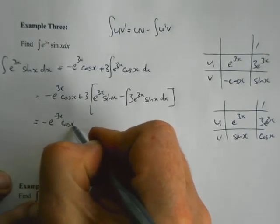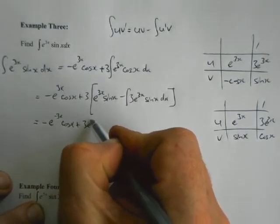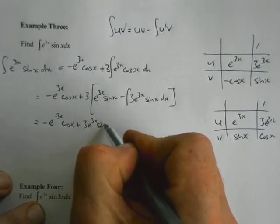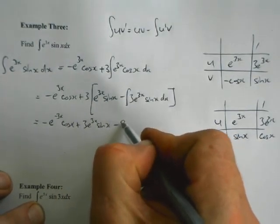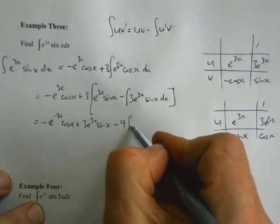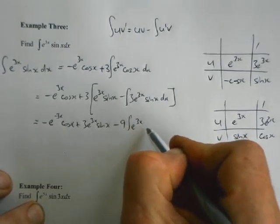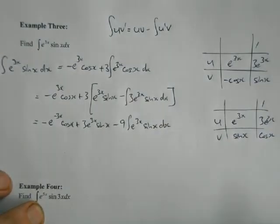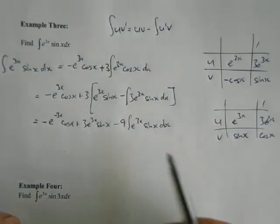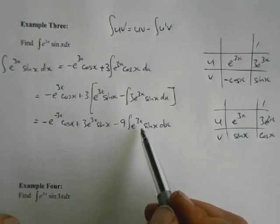We've got u times v, so that one times that one is e to the 3x times sine x, minus the integral of u' times v, so 3e to the 3x times sine x dx.